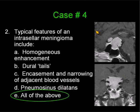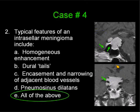Let's look at the findings. In this case, we have homogeneous enhancement on the sagittal and coronal image. We have a dural tail anteriorly and probably one posteriorly. We have encasement of the blood vessels — you can see them surrounding the blood vessels bilaterally. This dark linear area was actually a blood vessel in this patient.